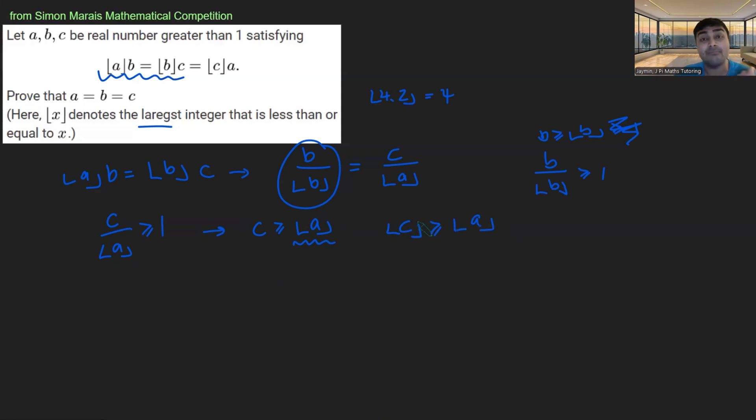Because remember, floor of C is the biggest integer smaller than or equal to C. And since floor of A is an integer smaller than or equal to C, the biggest integer must be at least that. It could be that or it could be bigger. So we get that floor of C is at least floor of A.